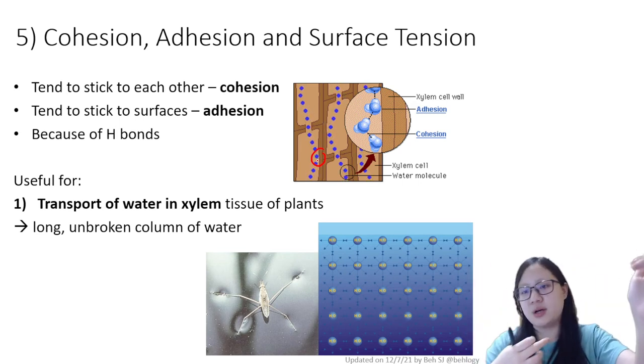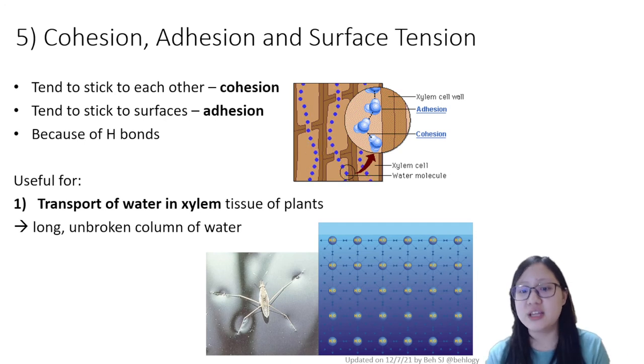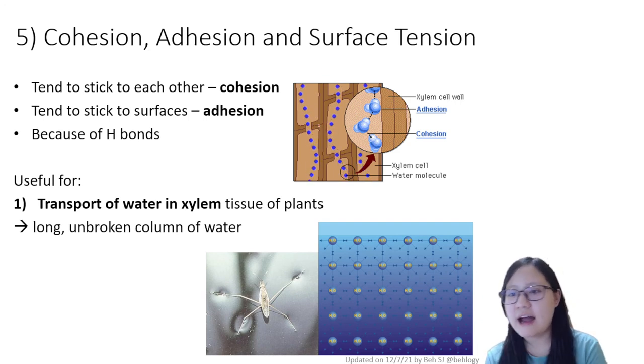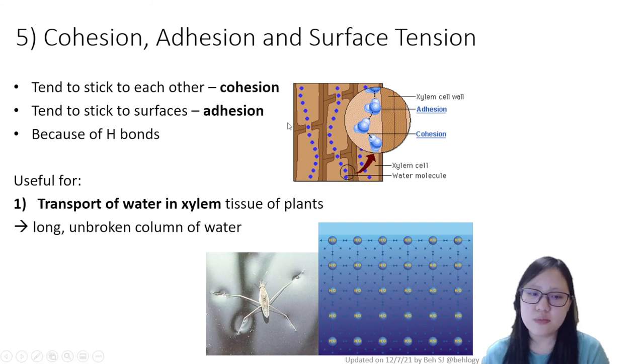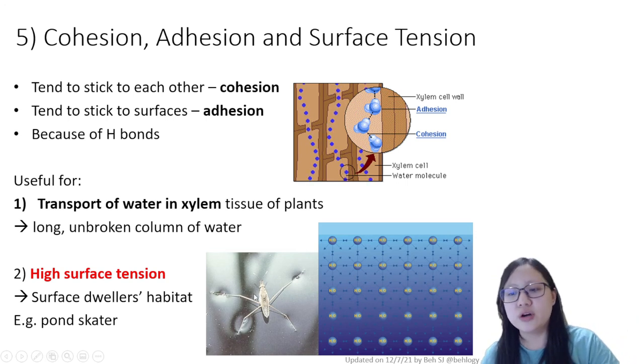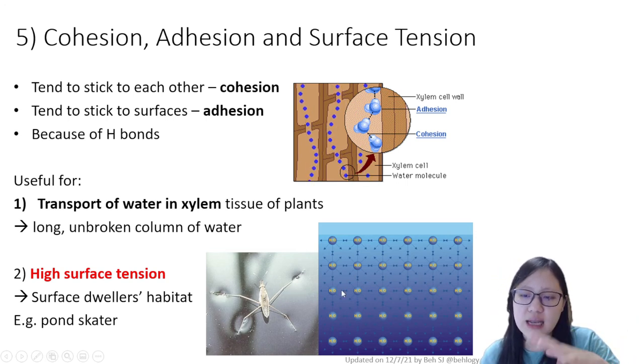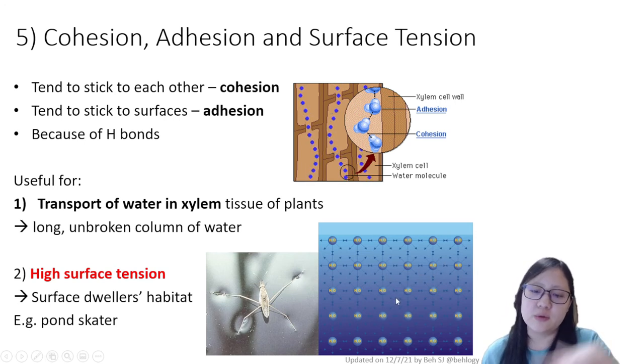This is how water moves against gravity in xylem tissue. It's incredibly fascinating - traveling at high pressure, very small tube, against gravity because of the cohesion and adhesion of water. Number two is high surface tension, and this is great for surface dwellers such as the pond skater. They can skate on the surface of the water without breaking the surface. This relies on the surface tension. The pond skater does not break the surface tension on water and therefore is able to walk on water.